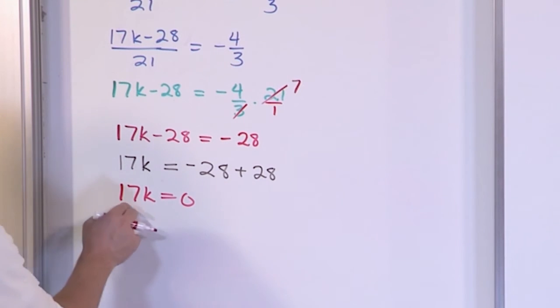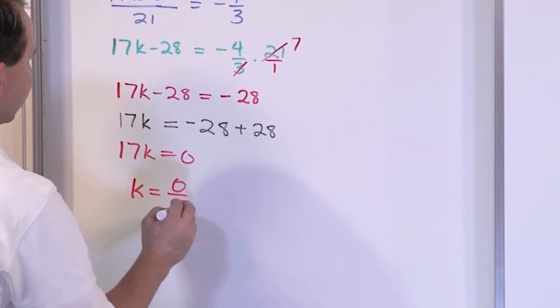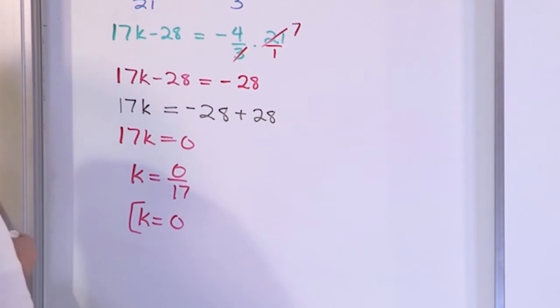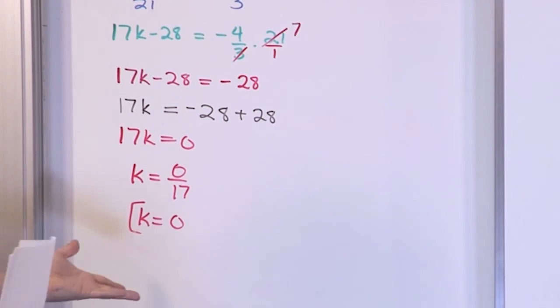And now to get k by itself, we divide by 17. That's going to get rid of them over here. Zero divided by 17. Anything, zero divided by anything is just zero. So lots of work. All we figured out is that k was actually zero, because once you get a zero over here, once you divide, then you still have zero.